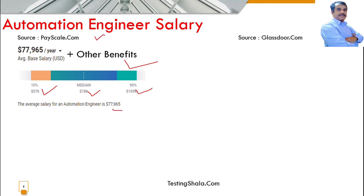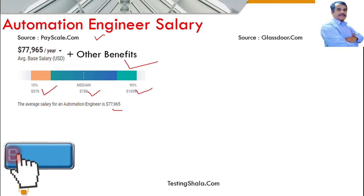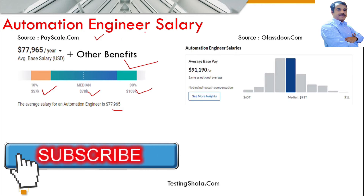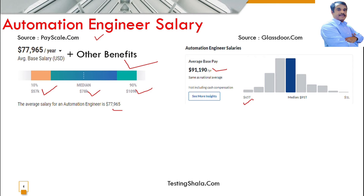According to Glassdoor, the average salary is around $91k per annum. The lowest is $65k and the highest is $100k, with a median of $91k for an automation engineer.